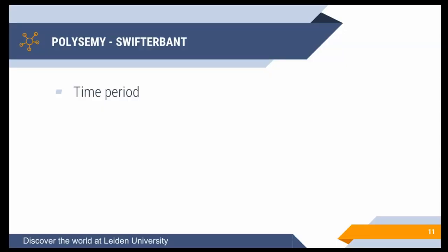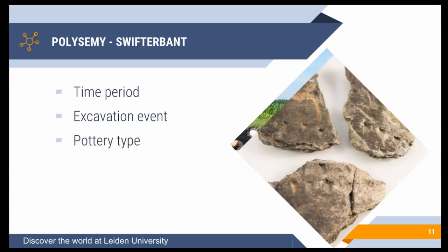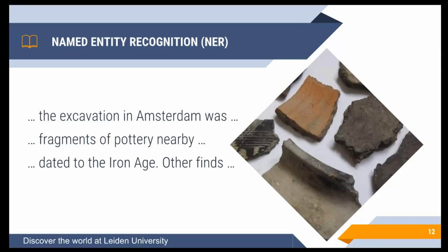Going the other way, 'Swifterbant' is a time period in the Neolithic, but it's also an excavation event, a type of pottery, and a specific place in the Netherlands. If you search for Swifterbant in Google it just gives you information about the place. So we need to find these entities in the text and disambiguate them, which can be done by a technique called named entity recognition, or NER — it goes through text, highlights terms that are specific concepts, and identifies what type of concept each one is.